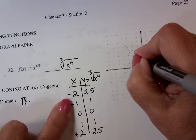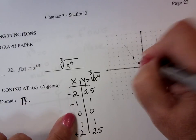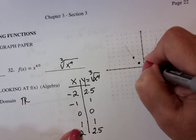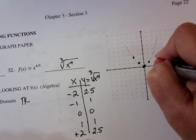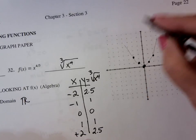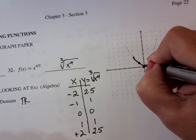And so at negative two, one, two, 2.5. At negative one, positive one. At zero, zero. At one, one. At two, 2.5. Now the difference is this guy is coming down and he's not rounded.